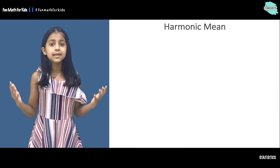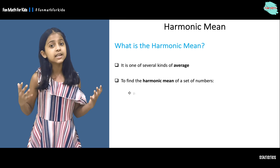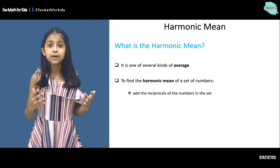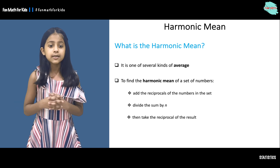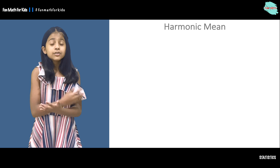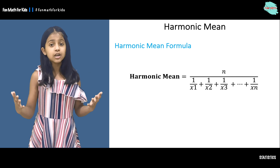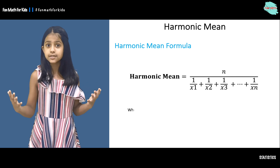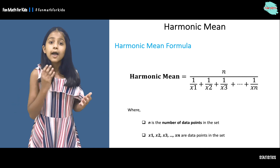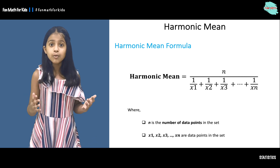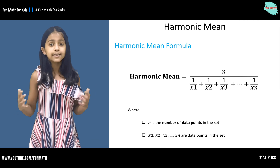What is the harmonic mean? It is a type of average. To find the harmonic mean of a set of numbers, we add the reciprocals of the numbers in the set, divide the sum by n, then take the reciprocal of the result. So the harmonic mean formula is n over the sum of the reciprocals of all the numbers, where n is the number of data points and x1, x2, x3, ..., xn are the data points in the set.